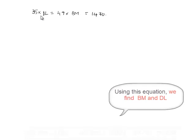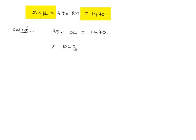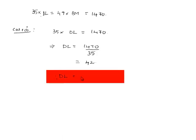For case 1, considering 35 × DL = 1470: that implies DL = 1470 ÷ 35. The value of 1470 ÷ 35 is 42. Therefore, DL = 42 cm.